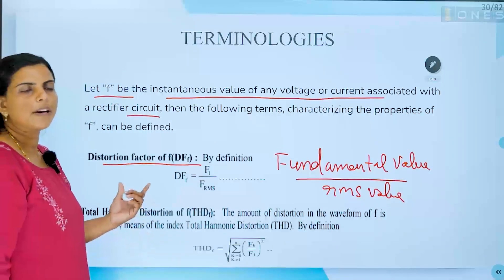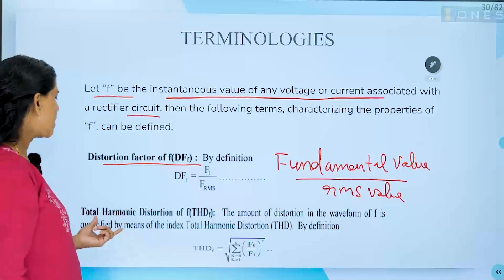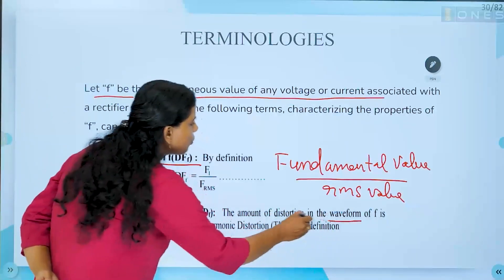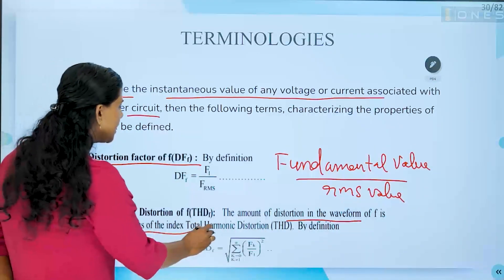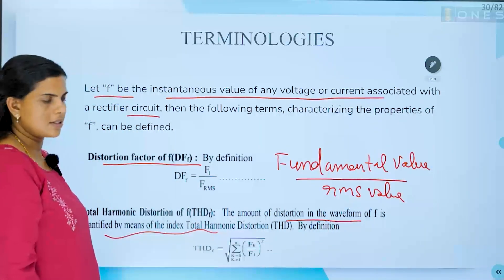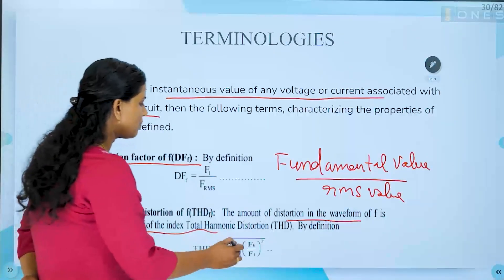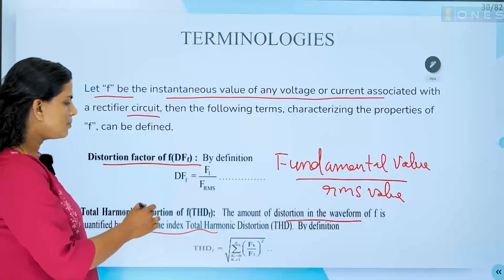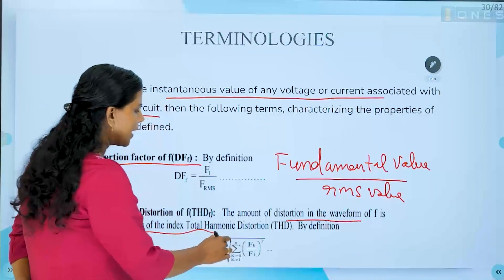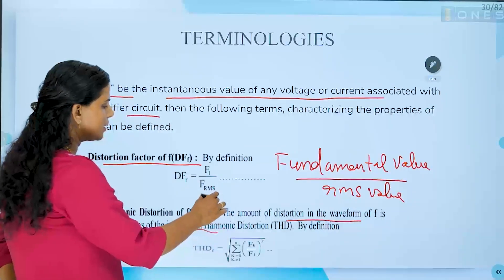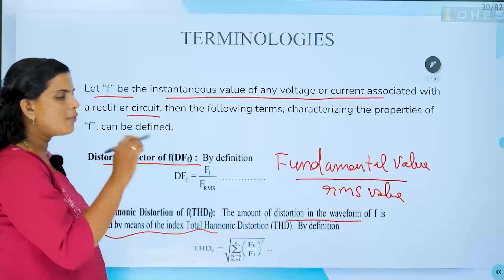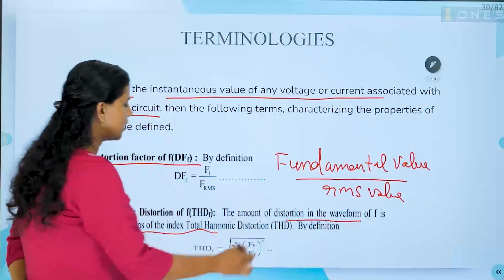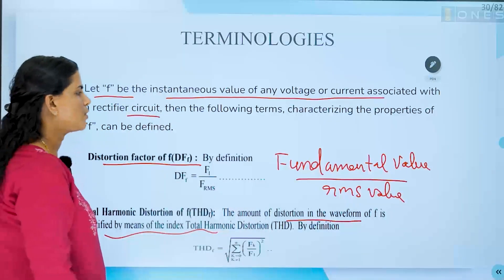In power electronics devices, remember there will be a lot of harmonics. So, total harmonic distortion quantifies the amount of distortion in the waveform of F. Total harmonic distortion of F is defined as the square root of the sum (σ, k = 0 to ∞, where k ≠ 1) of (Fk / F1)², where F1 is the fundamental value.